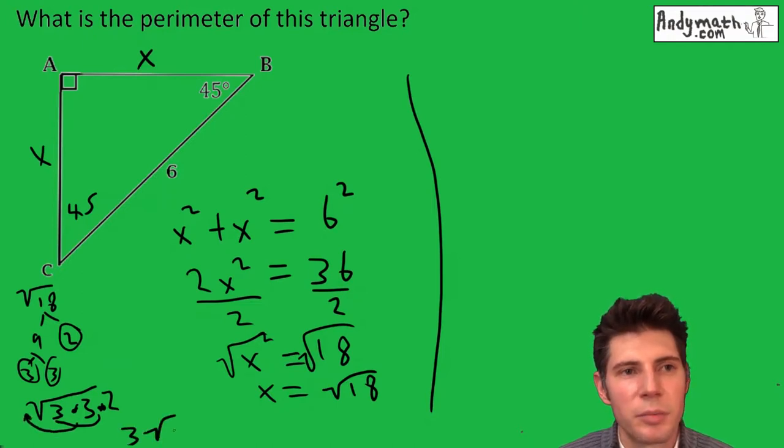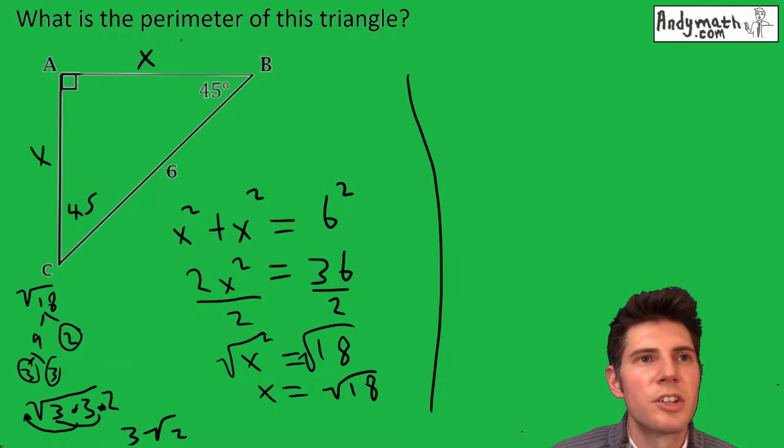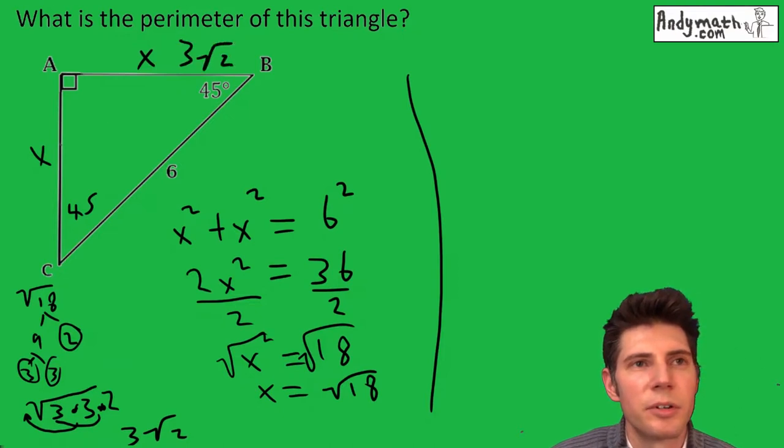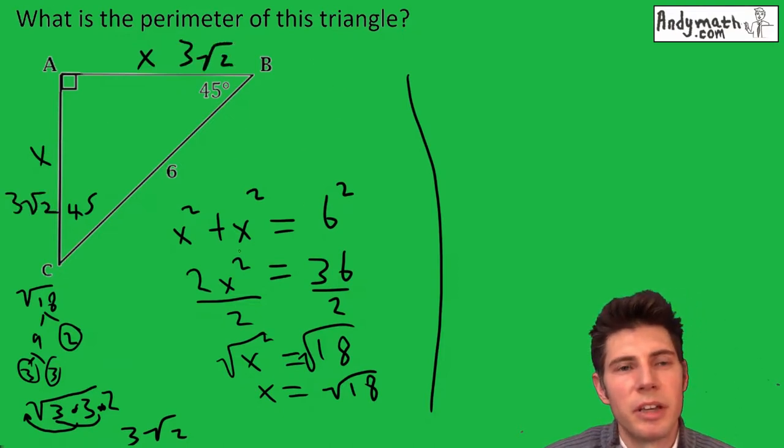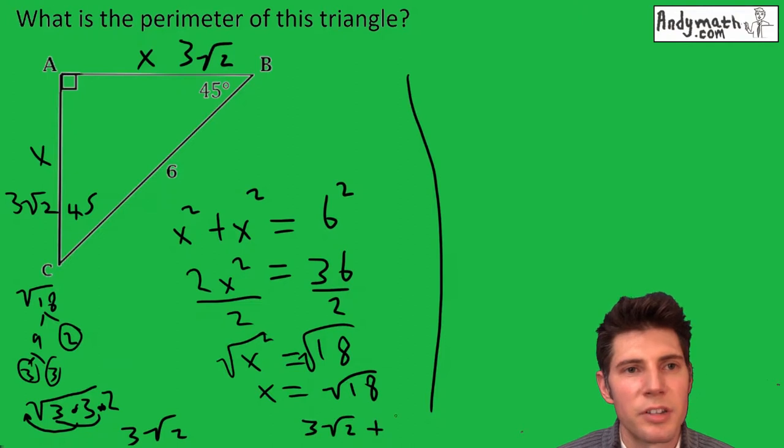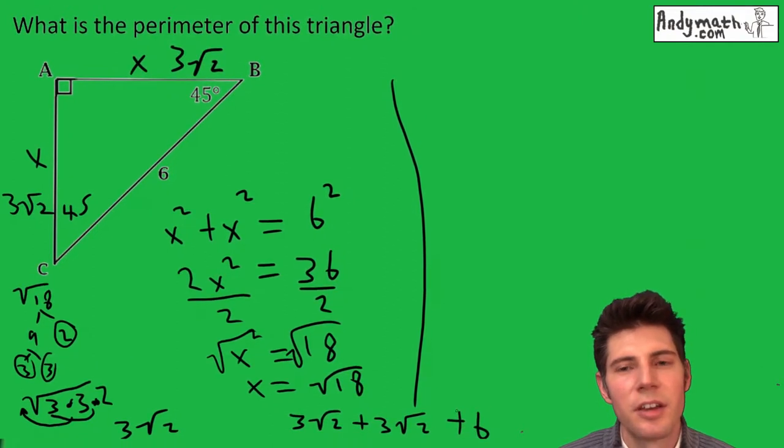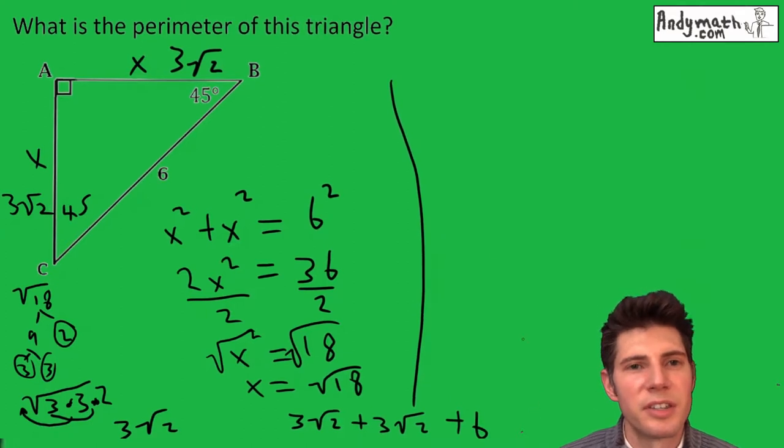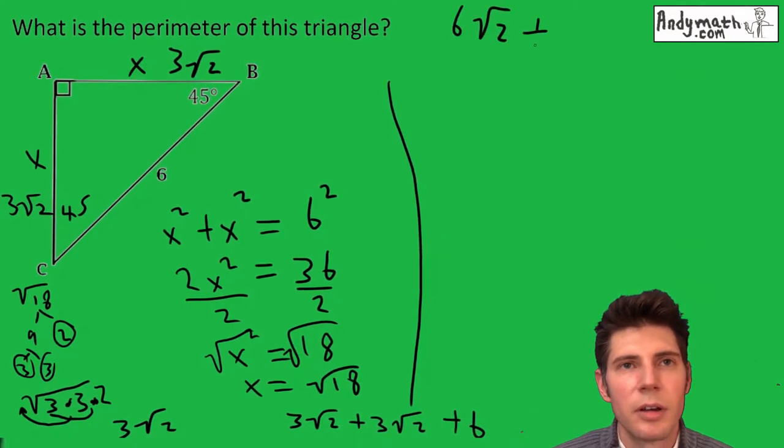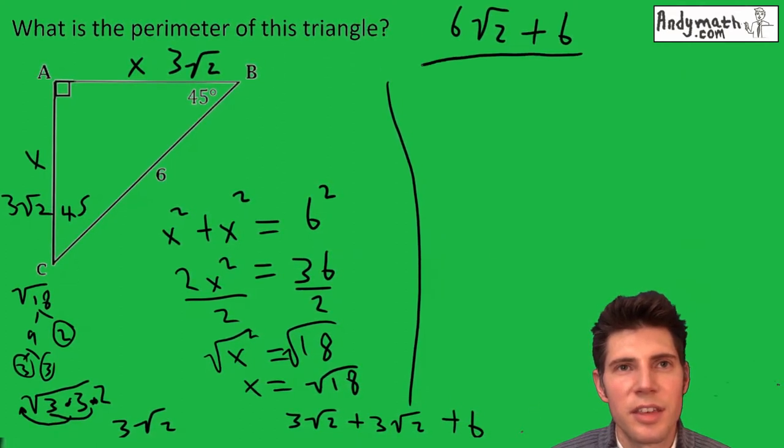So each of these sides is three root two. Now the perimeter is going to be three root two plus three root two plus six. I just added up the three sides. Three root two plus three root two is six root two plus six. This is the answer to the question, and to give it a label we could say units.